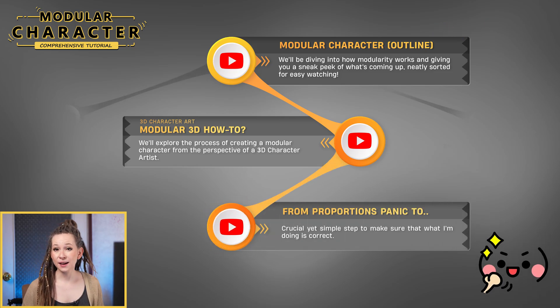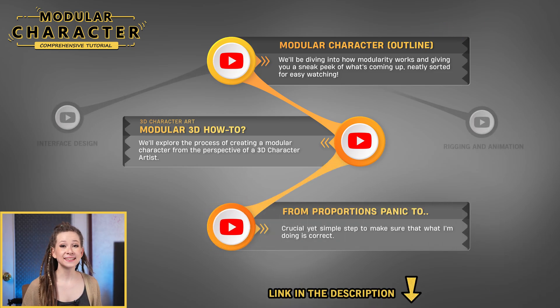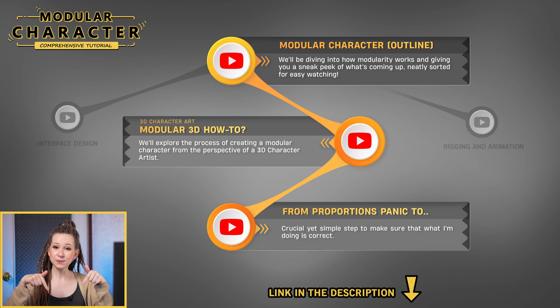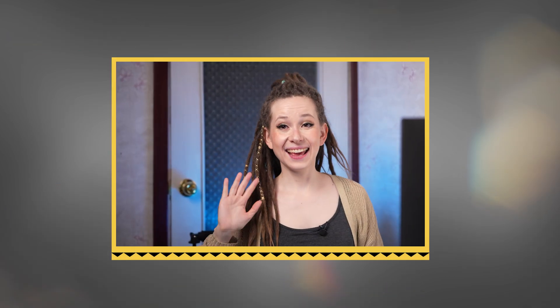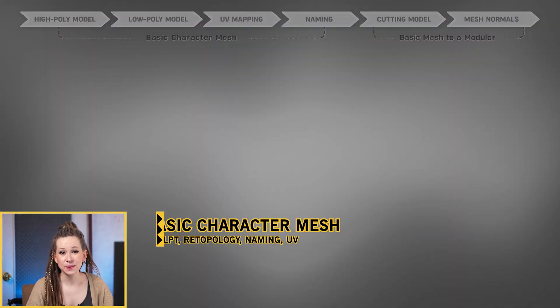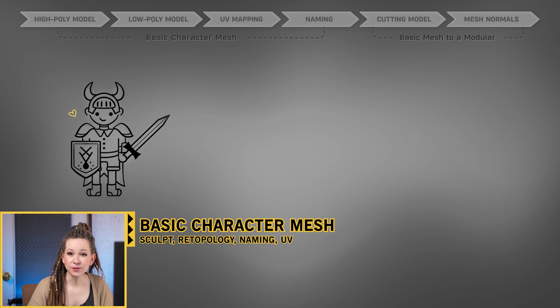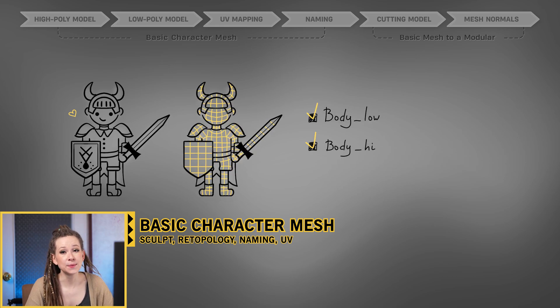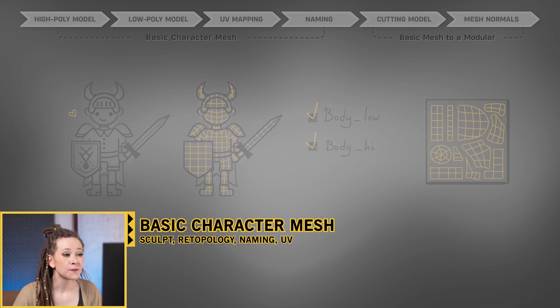If you haven't, you can find the link in the description below. I'm YOLO. Here's a quick overview of the workflow stages we'll cover: basic character mesh, sculpt, retopology, naming, and UV.